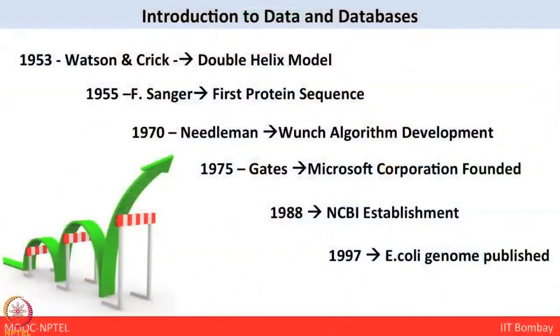Even before 10 or 20 years, the amount of data generated was not as huge as what is being generated today. In 1953, Watson and Crick were the first to propose the double helix model for DNA based on X-ray data — this can be taken as the first milestone of data generation. After that, in 1955 the sequence of the first protein, bovine insulin, was analyzed, followed by 1970 when the Needleman-Wunsch algorithm came into play.